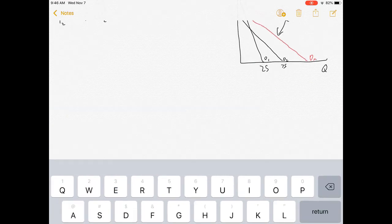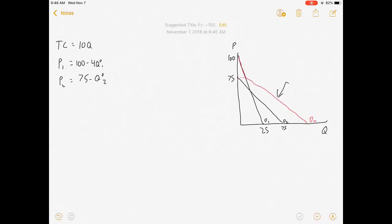So QD1 is equal to 25 minus one-fourth P, and QD2 is equal to 75 minus P.